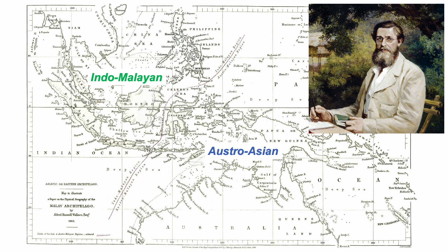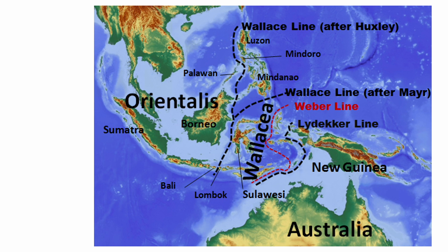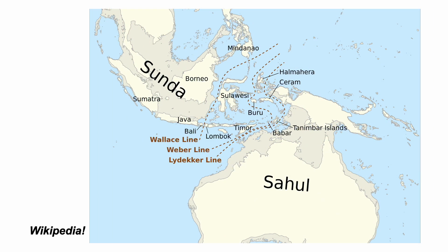This is one of his maps, marking the distribution of distinct faunal assemblages, which might be termed Indomalayan and Austro-Asian. Other people recognise different animal groupings, so Southeast Asia is carved by biological boundaries, and the transition zone is known by some as Wallacea. But it's a confusing picture.